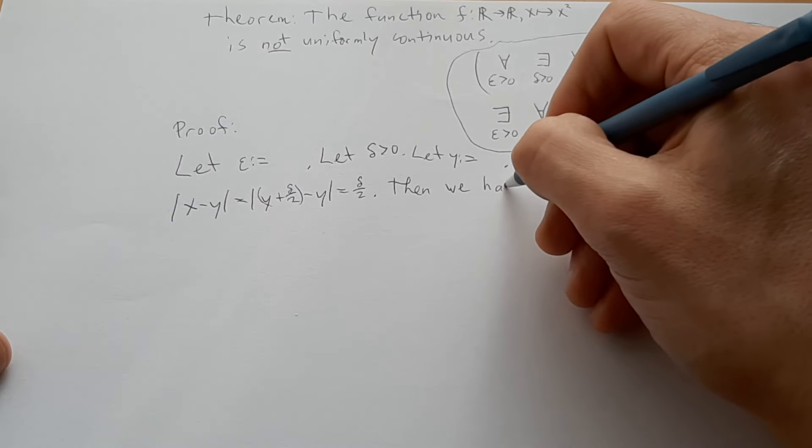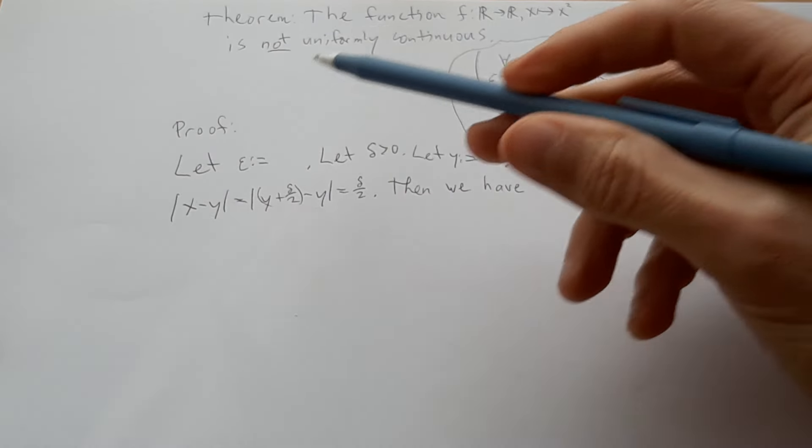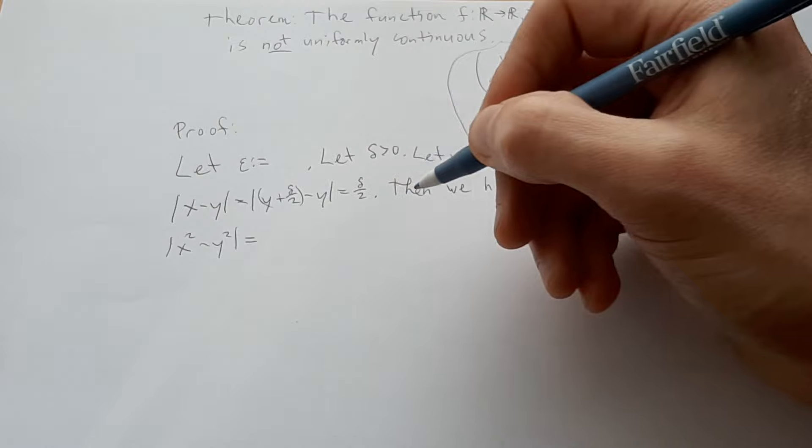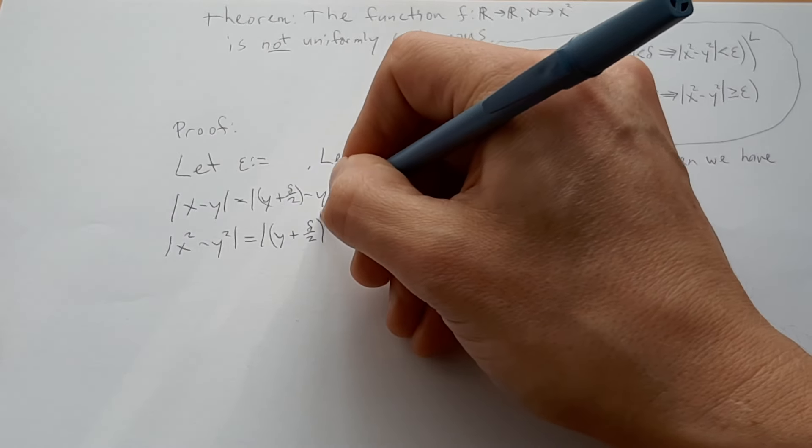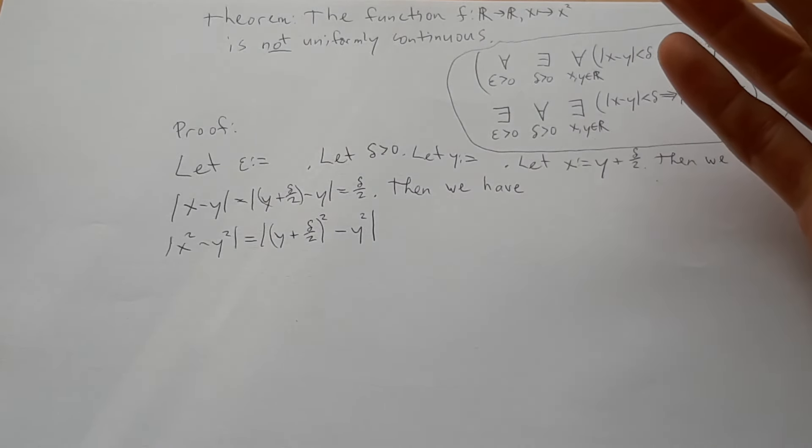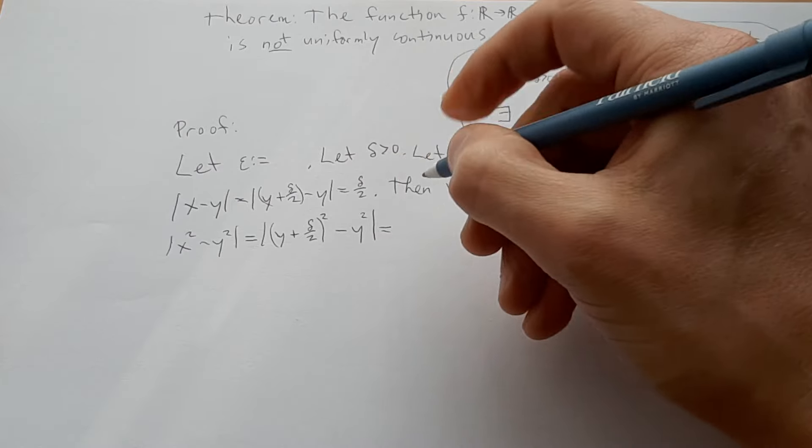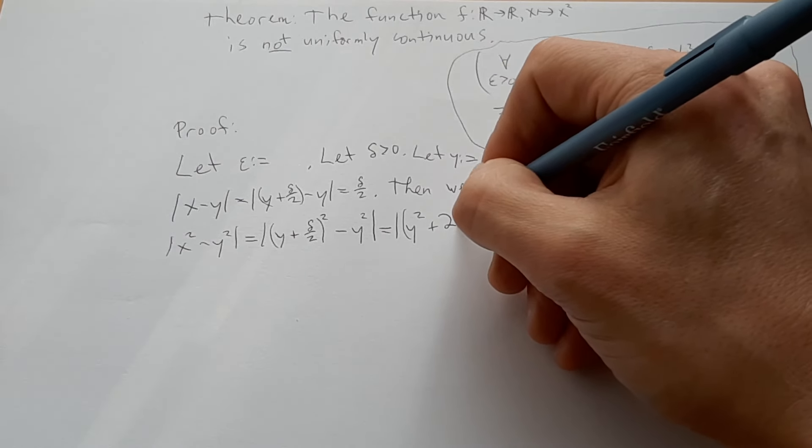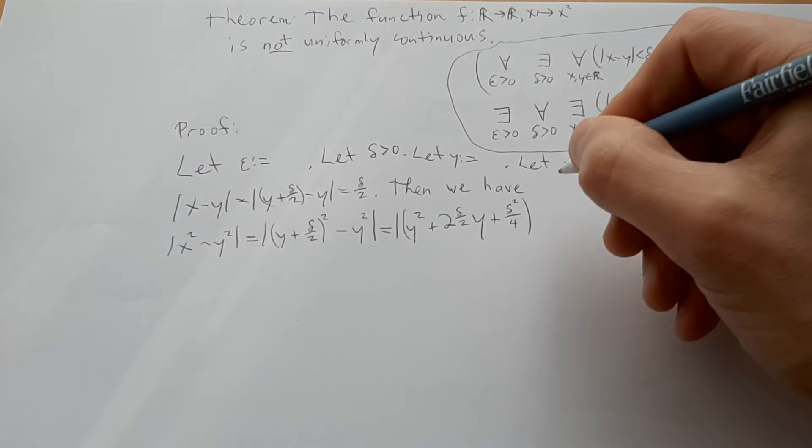And now if we continue to calculate, maybe we can figure out some good values for what we haven't defined yet: y and epsilon. So let's try that. We'll say x squared minus y squared is equal to, now so we'll just sub in, y plus delta over 2. Now of course we don't know if this is going to work. Minus y squared. But at least we can get started by just diving in and maybe something will turn out.